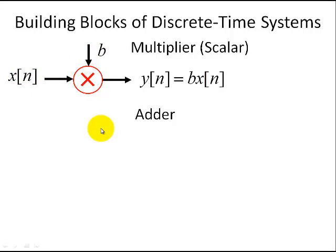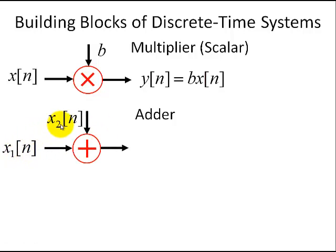The second building block is the adder, and basically you have two inputs, x1[n] and x2[n], and you simply add up those two inputs to get your output.